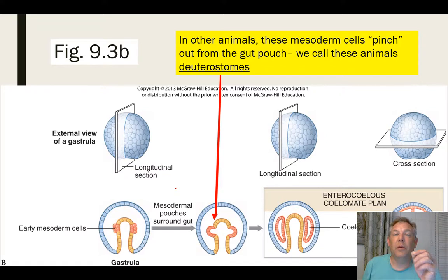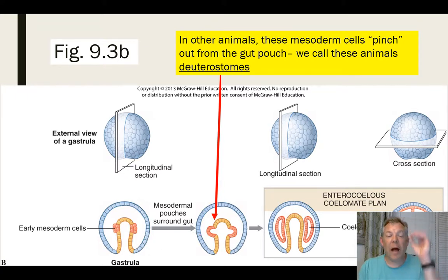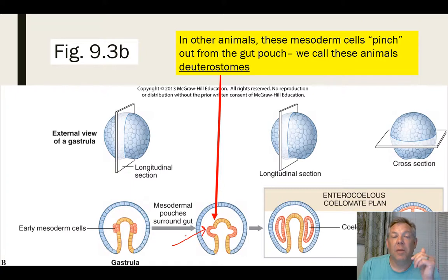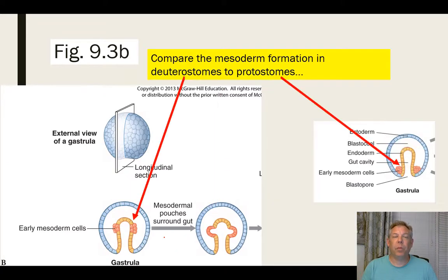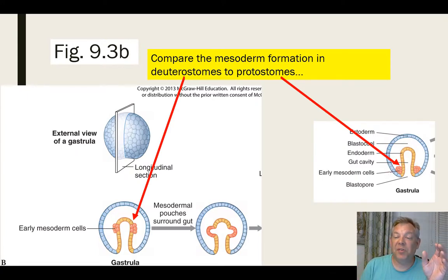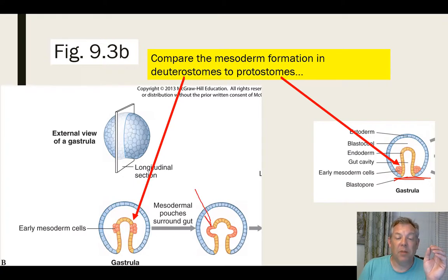We're looking at how that mesoderm is formed to group a bunch of animal phyla into the big group called the protostomes. In some other triploblastic animals, the mesoderm does not form near the blastopore — it forms up higher and kind of pinches off. Both groups come from the endoderm, but the mesoderm forms in a different place. This group of organisms is called deuterostomes. So it's a different group of organisms based upon how they develop. In protostomes, the mesoderm forms near the blastopore; in deuterostomes, it forms up higher where it pinches off.